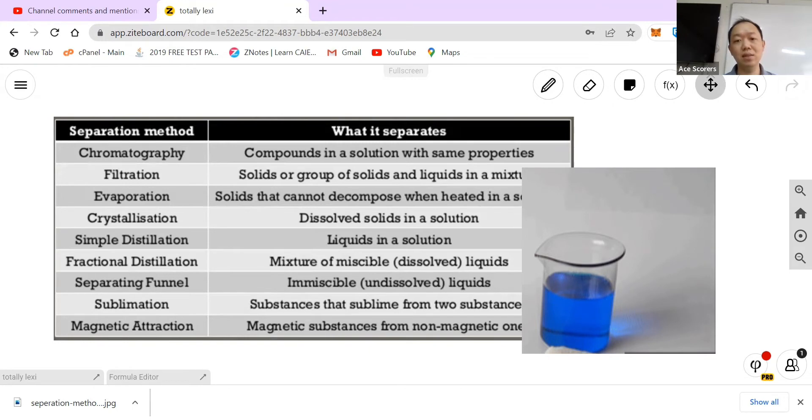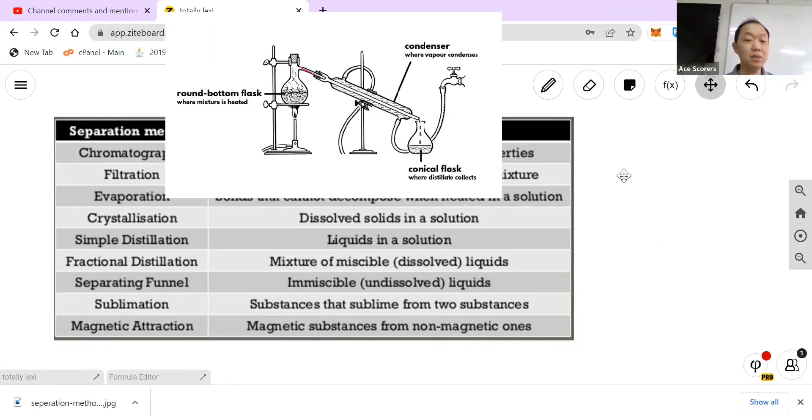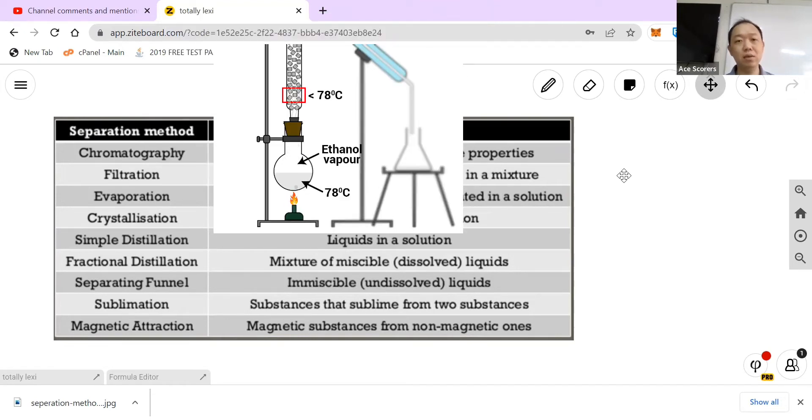Things like copper sulfate, you want the crystal but you do not want the liquid. You will use crystallization. Simple distillation: liquids in a solution, usually we call them miscible liquids. Example: ethanol or alcohol and water, and both of them must have different boiling points. Fractional distillation will be a more complicated form of simple distillation.